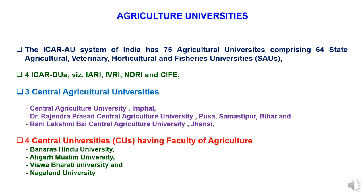There are three Central Agricultural Universities: Central Agricultural University, Imphal; Dr. Rajendra Prasad Central Agricultural University, Pusa, Samastipur, Bihar; and Rani Lakshmi Bai Central Agricultural University, Jhansi, Uttar Pradesh. There are four Central Universities with Faculty of Agriculture: Banaras Hindu University, Aligarh Muslim University, Vishwa Bharati University, and Nagaland University.